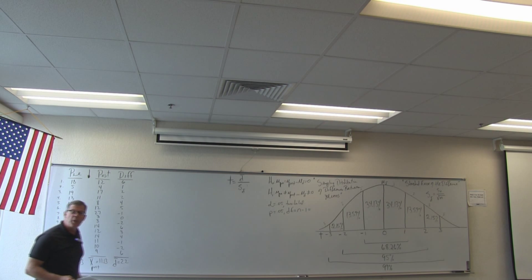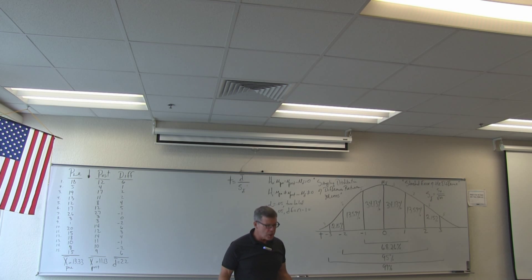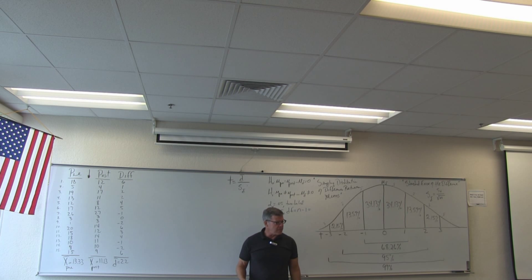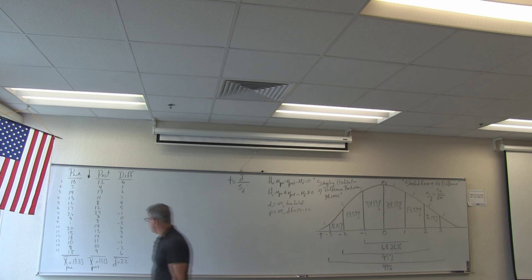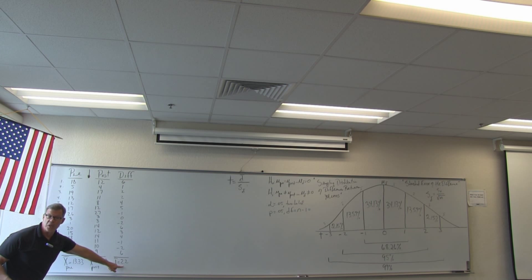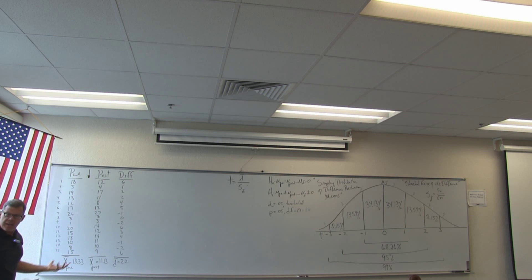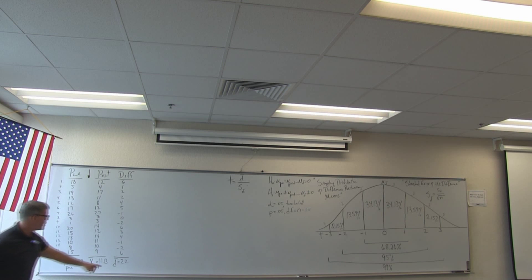The first thing we do when we get any data set is look at it. When you look at baseball box scores, you look at them — it tells you things. We have a mean difference here — actually a 2.2 pound reduction overall. Now our job is to determine where this 2.2 falls on the sampling distribution of differences between means.